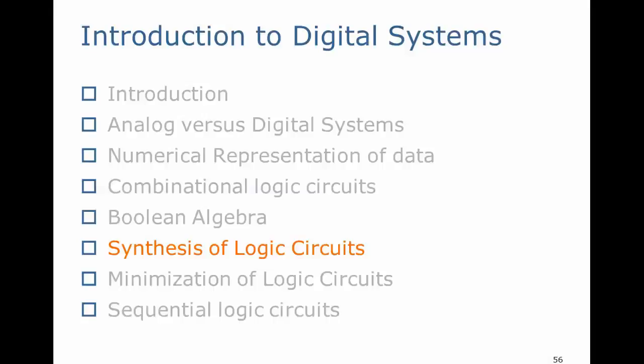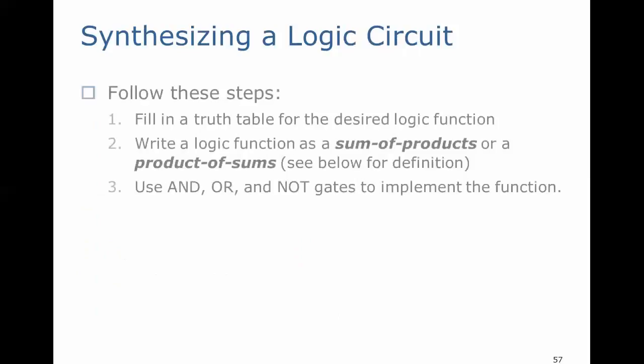We now want to look into formalizing the synthesis of logic circuits. To implement a logic function into a circuit, we're going to follow these three steps. First, fill in a truth table for the desired logic function. Second, write a logic function as a sum of products or a product of sums. These will be defined in the following slides. And finally, we will use AND, OR, and NOT gates to implement the function.